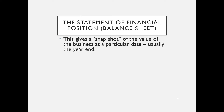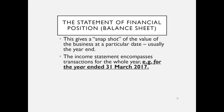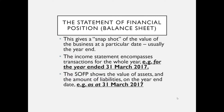The statement of financial position, otherwise known as the balance sheet, is not for the year ended. It gives a snapshot of the value of the business at a particular date, usually the end of the year. Whereas the income statement covers transactions for the whole year, the statement of financial position shows assets, liabilities, and owner's capital as at that given date, which could all change the following day.